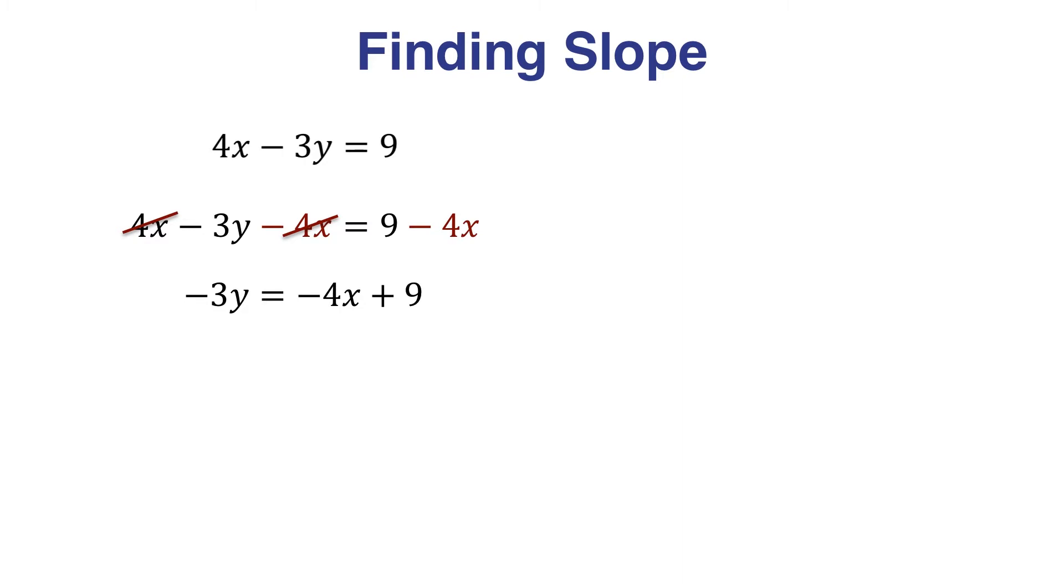I can commute or move the terms around and preserve the equation. So we're left with negative 3y equals negative 4x plus 9.